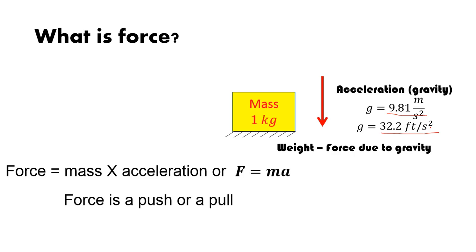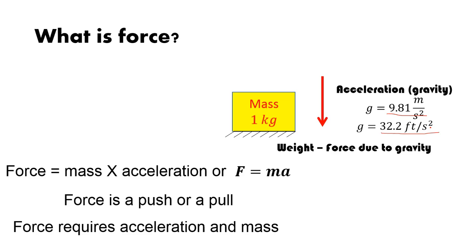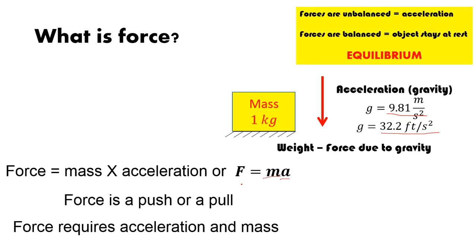Force is a push or a pull, and force requires acceleration and mass, as shown by Newton's second law. When forces are unbalanced — unopposed on one side — you see movement. When forces are balanced, the object stays at rest, known as equilibrium. Our mass sitting on the ground is in equilibrium: it's not moving toward the center of the earth nor floating into the sky.